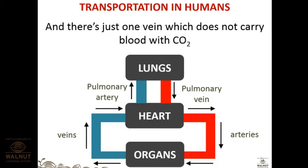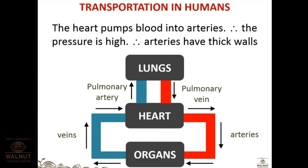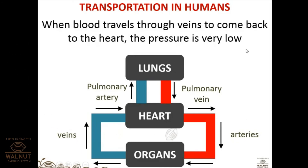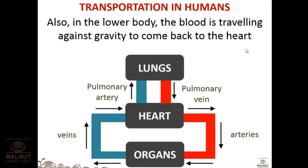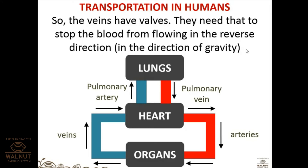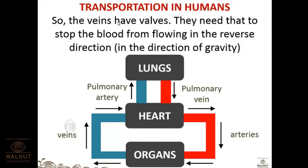Arteries have thick walls to sustain the very high pressure of blood pumped by the heart. Veins have low pressure, so they do not need thick walls. However, in the lower body, blood travels against gravity back to the heart, so veins have valves to prevent reverse flow. Arteries do not have valves because the pressure is already very high, making reversal impossible.